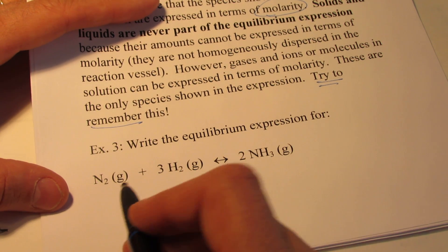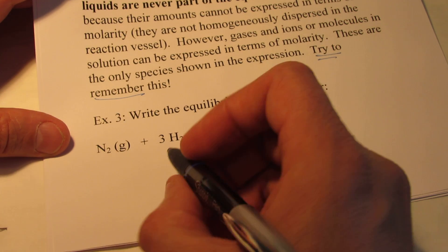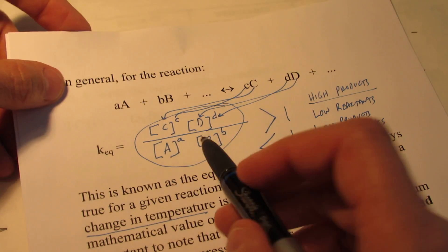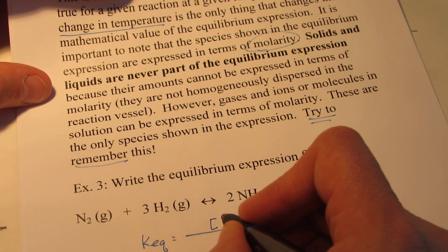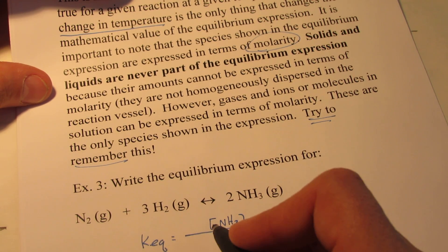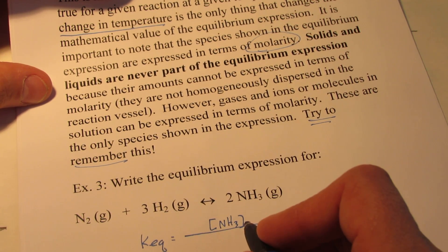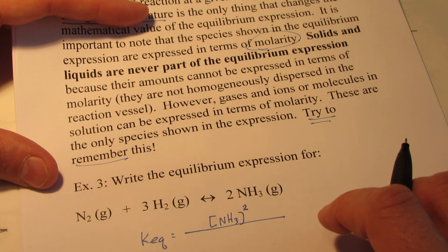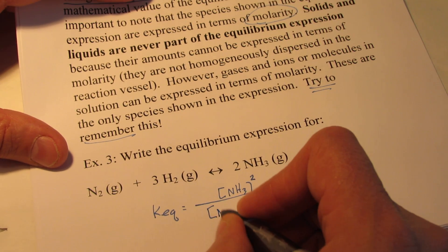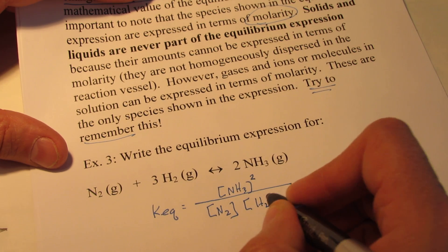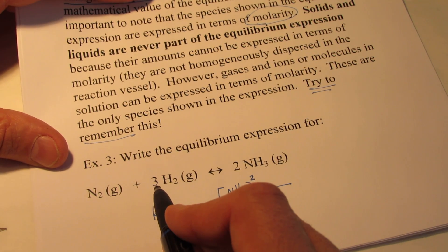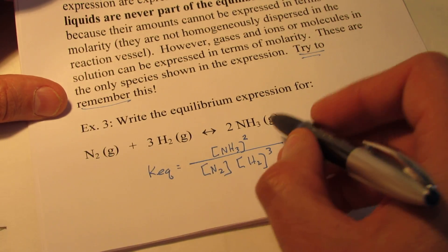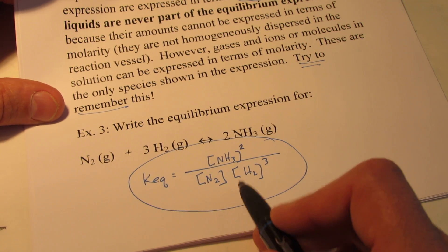So let's start with a pretty simple problem and write the equilibrium expression for this reaction. We'll start with K-eq equals. Think about what goes on top — products go on top, and we express concentration using brackets, which mean molarity. The coefficient in the balanced equation becomes the exponent in the equilibrium expression. My reactants go on the bottom: N₂ and H₂, with H₂ raised to the third power because that's the coefficient in the balanced equation. This would be the equilibrium expression for this reaction.